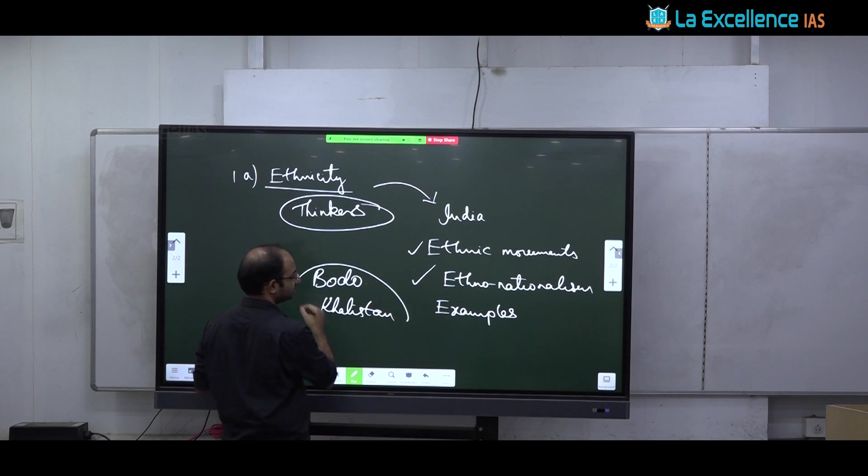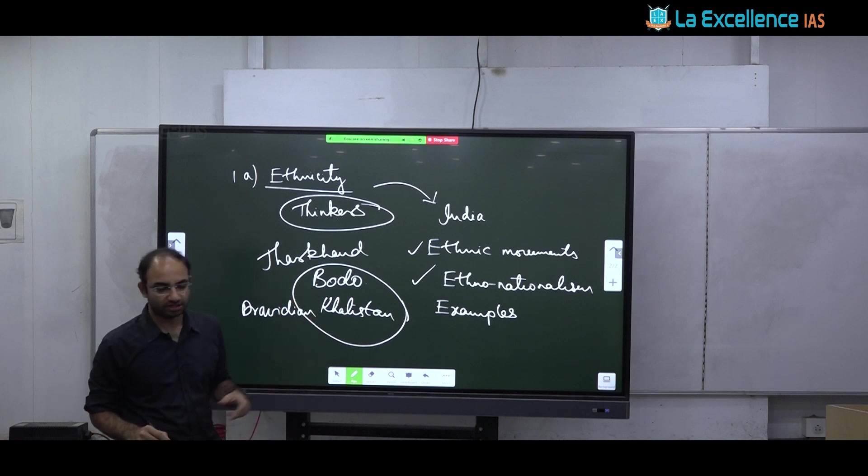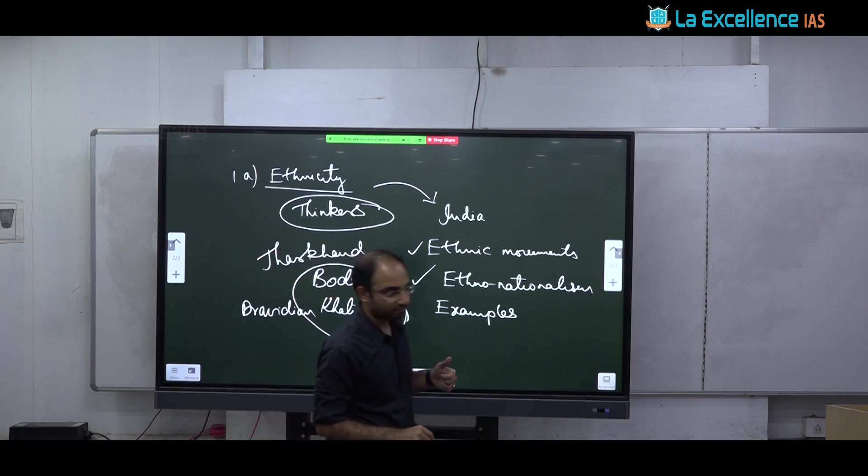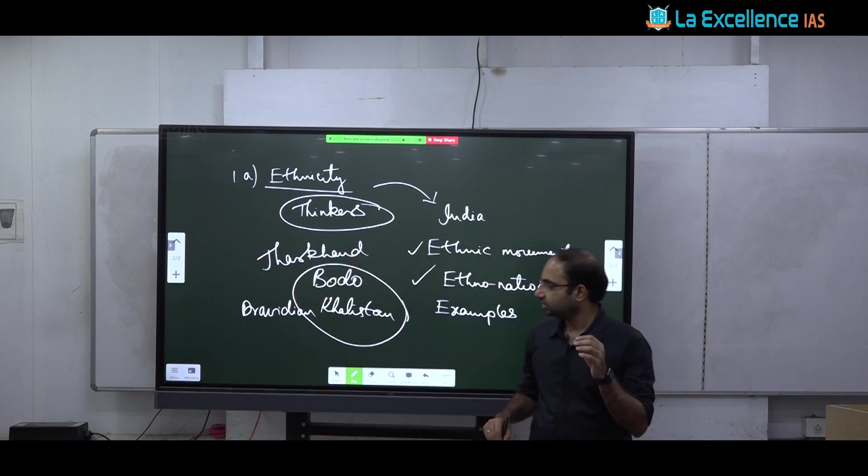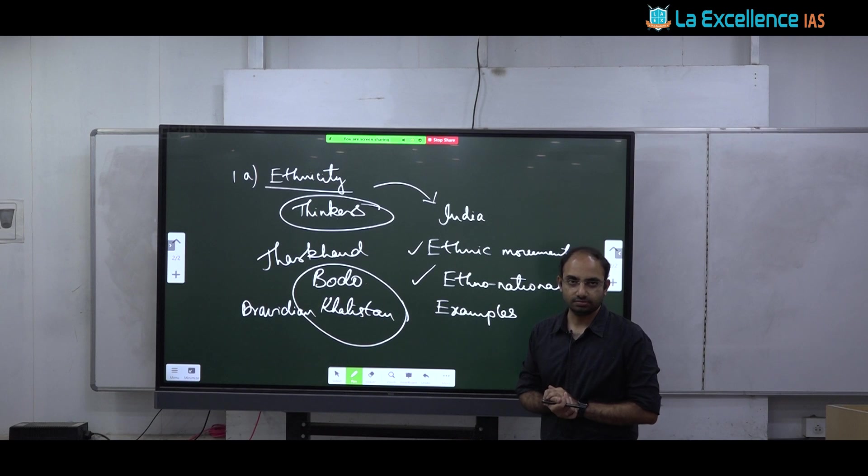You have many other examples. The movement for Naga, Naga movement, Meso movement, presently Bodo movement, Khalistan movement. These are all ethnicity based movements, Jharkhand movement, Dravidian movement. So you have plenty of examples of ethnic movements in India, but no examples have been mentioned. That is a major drawback.